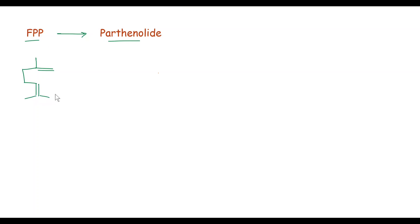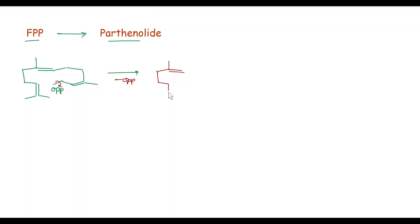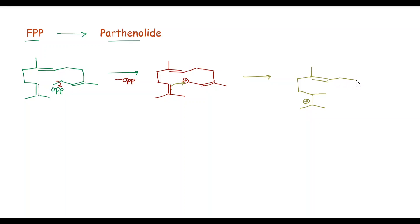Now we will see the biogenesis of parthenolide from FPP. In the first step, the structure of FPP has OPP and CH3 CH3. Loss of OPP takes place from FPP, and in the next step, this double bond attacks on this carbocation, and we get here a positive charge, here a double bond and CH3. This is known as the germacrane cation.